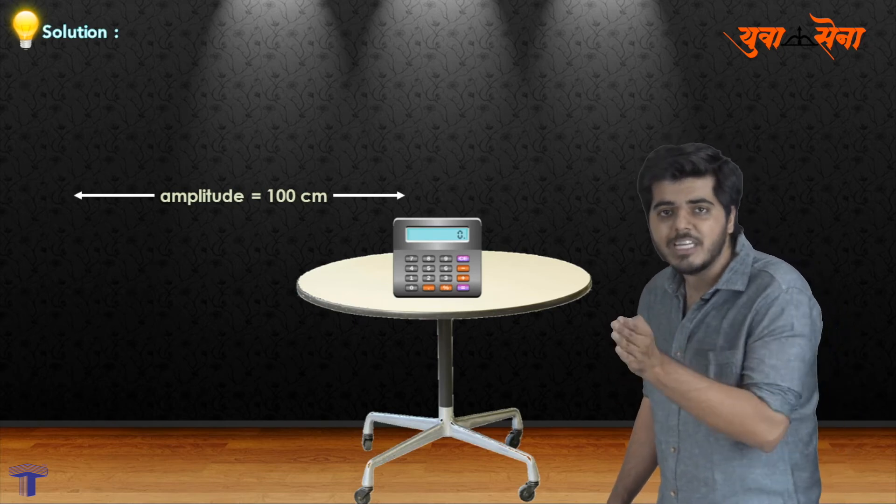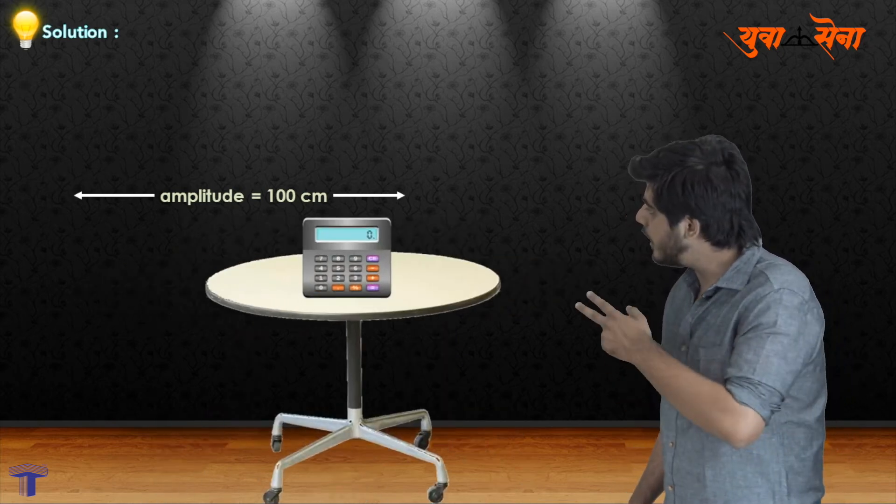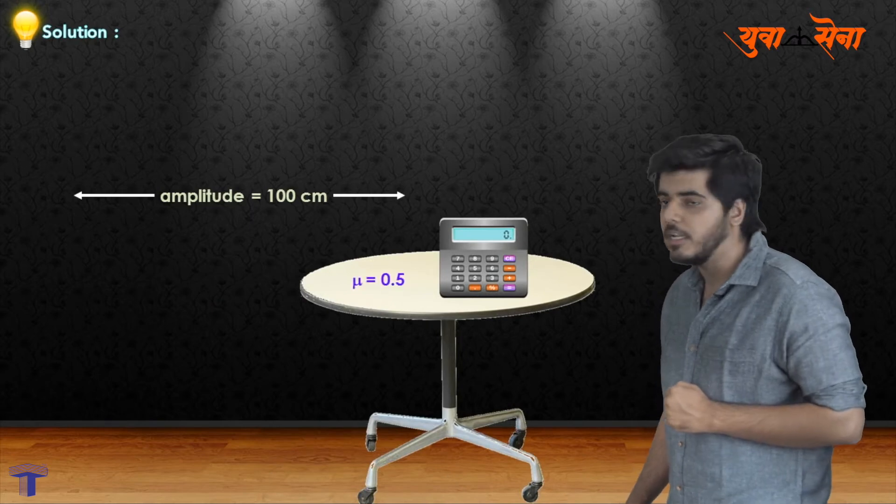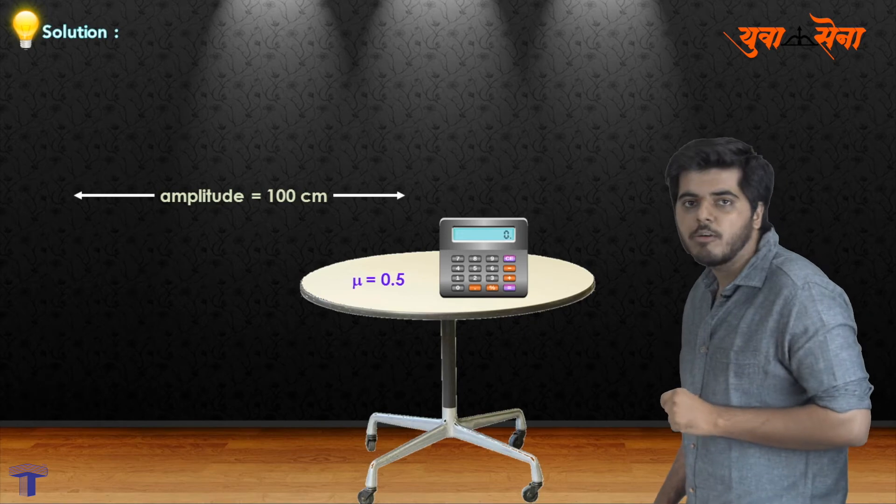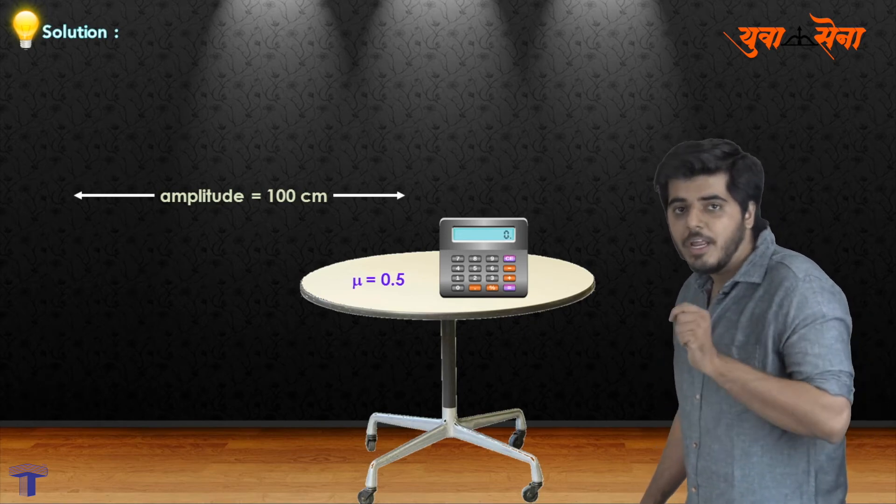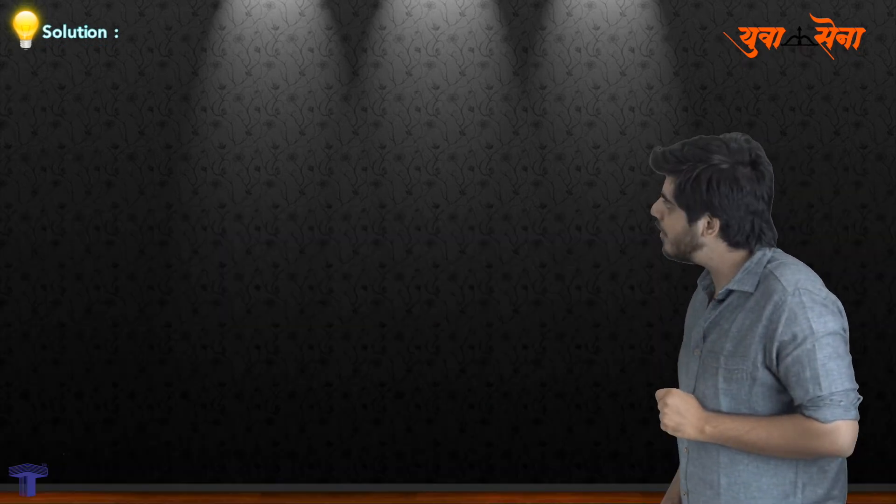We need to find at what frequency the calculator will just slide. If we increase the frequency of the oscillations, the calculator will begin to slide. The mu value given in the question is 0.5.